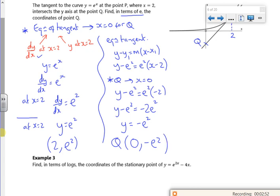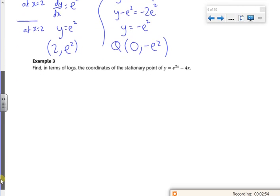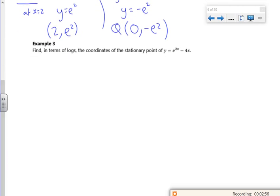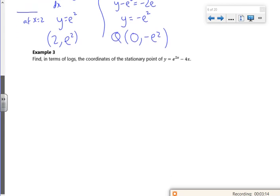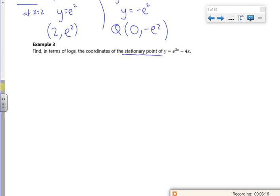There. So my coordinates for Q is 0 comma minus e squared. There. That's all right, it's not too bad. So I'm looking at example 3 then. Right, so I'm just doing stuff which I'd kind of done previously on differentiation in the first pack. So I've found an equation of a tangent, and now I'm going to find a stationary coordinate. So everything still works the same.